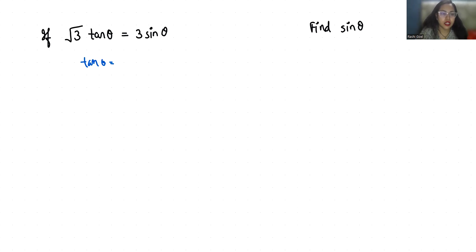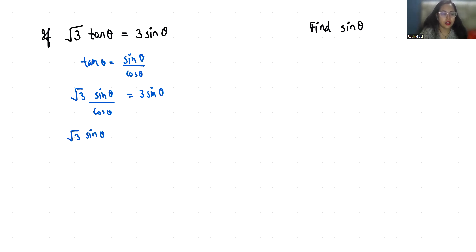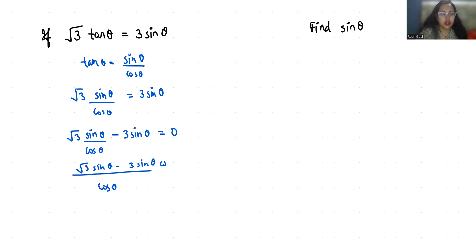So it becomes root 3 sin theta by cos theta equals 3 sin theta. Now we take this 3 sin theta to this side, so minus 3 sin theta equals 0. Now if I take LCM, it becomes cos theta times root 3 sin theta minus 3 sin theta cos theta equals 0.